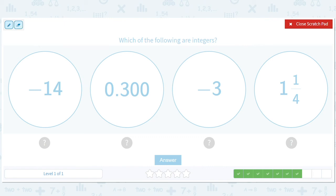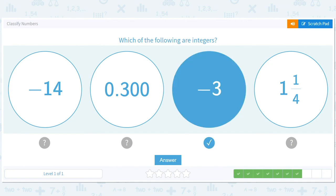But we're going to go with that's an integer, that's an integer. These have fractional or decimal pieces. So that one and that one.